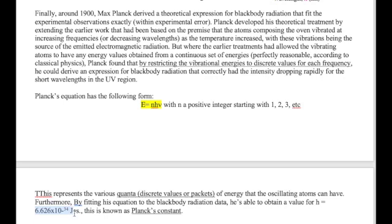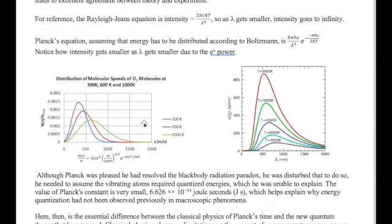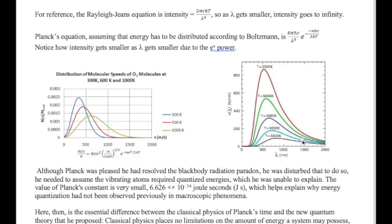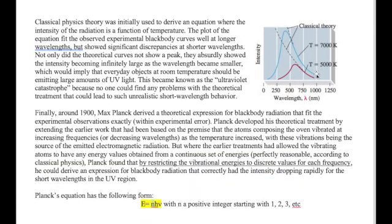The value of Planck's constant is 6.626 times 10 to the negative 34 joule-seconds. N is a positive integer — it can have values of 1, 2, 3, etc. What Planck is saying is that the energy of light comes in the form of packets of h-nu. N is the number of packets, so it could be one packet, two packets, three packets, but it has to come in chunks of h-nu — it can't have continuous values like 1.3 packets. By restricting energy to those specific values, he was able to model and fit the blackbody radiation, and as you can see, these plots generated at different temperatures match what was actually observed from experiment.